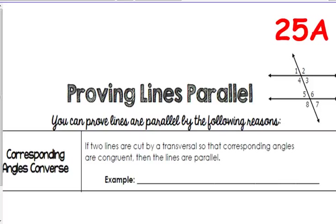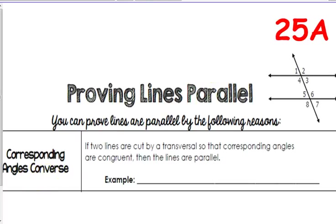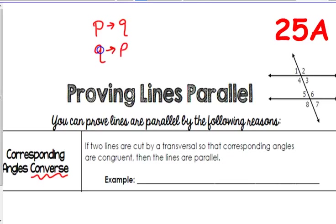These are the notes on Worksheet 25A, or Spiral page 25A. You should have this taped in your spiral by now. These are all the theorems we learned earlier this unit, but these are the converse. Remember when P implies Q was your conditional statement — the converse is Q implies P. So all of these are proving that lines are parallel.